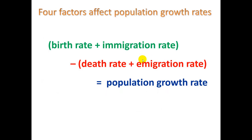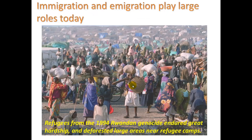There are four factors that affect population growth rates: birth rate plus immigration rate increase the growth rate, while death rate and emigration rate reduce it. The difference between these two opposing factors gives you the net population growth rate. Immigration and emigration do play a large role today, where people are more mobile with greater transportation. Refugees from the 1994 Rwandan genocide also deforested large areas near refugee camps for resources, showing there can be environmental impacts to migration as well.